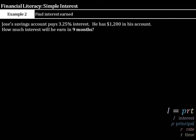Let's move on. Jose's savings account pays 3.25% interest. He has $1,200 in his account. How much interest will he earn in nine months? Nine months in bold, because that's going to be really important that we do the right thing there.